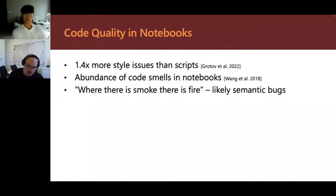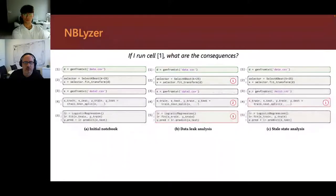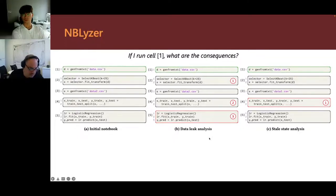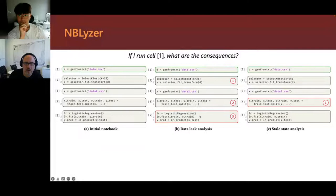On the other hand, it's no secret that notebooks tend to have more code issues. So the obvious question is: can we do code analysis on notebooks? For example, if we have a notebook and run cell one, we may want to know if we'll encounter a data leakage issue. We can show that if you run cell one, cell four, and then cell five, you'll end up doing training, then normalization, and then splitting — a well-known ordering that causes data leakage.